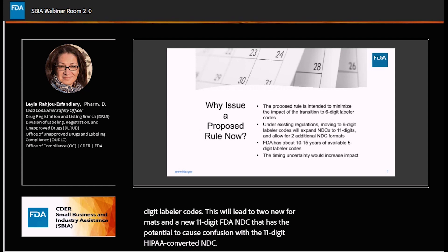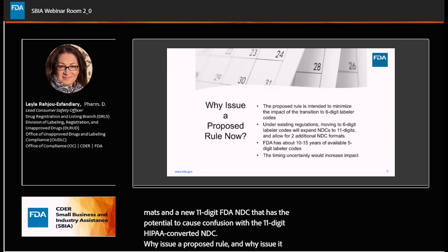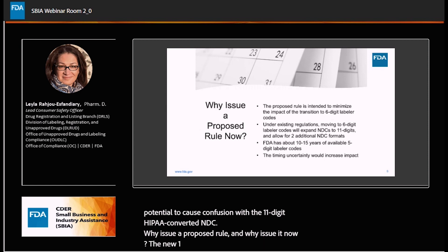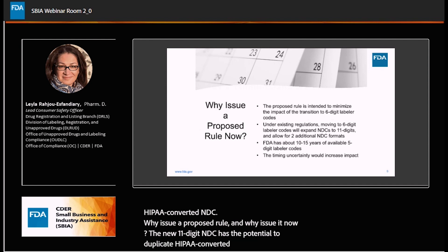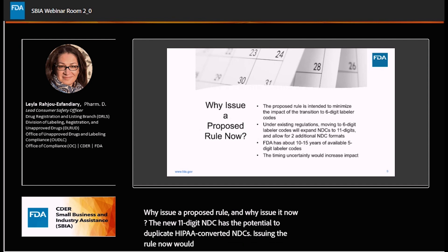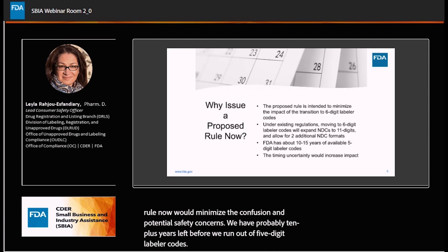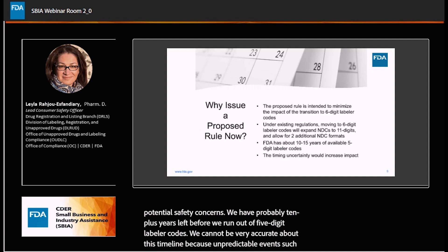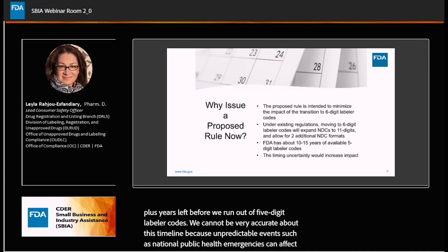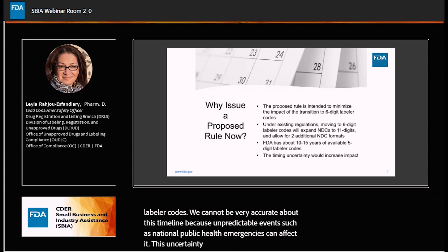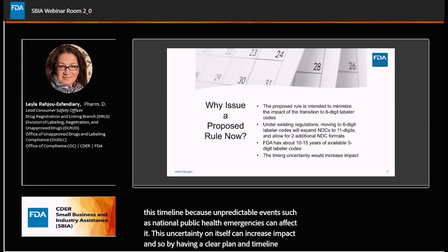Why issue a proposed rule, and why issue it now? The new 11-digit NDC has the potential to duplicate HIPAA-converted NDCs. Issuing the rule now would minimize the confusion and potential safety concerns. We have probably 10-plus years left before we run out of five-digit labeler codes. We cannot be very accurate about this timeline because unpredictable events such as national public health emergencies can affect it. This uncertainty itself can increase impact, so by having a clear plan and timeline, we can try to minimize that impact.